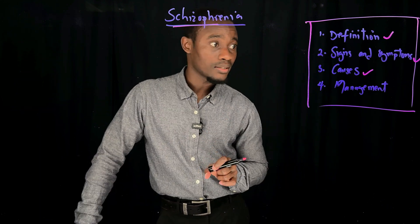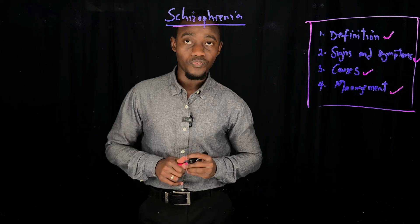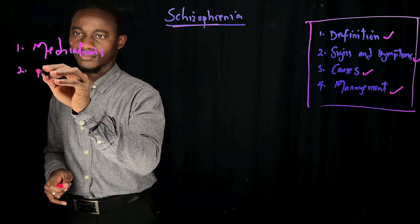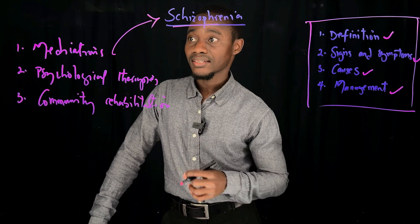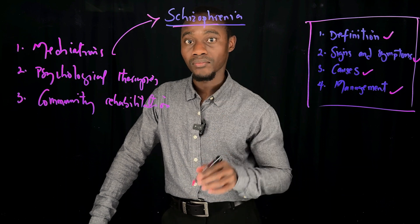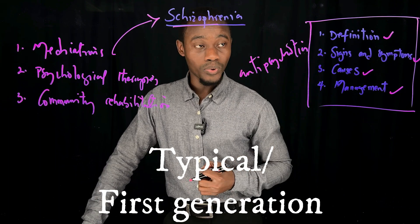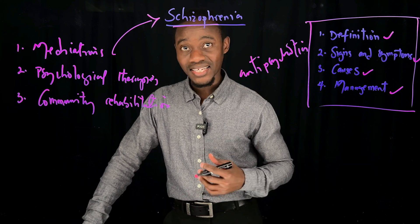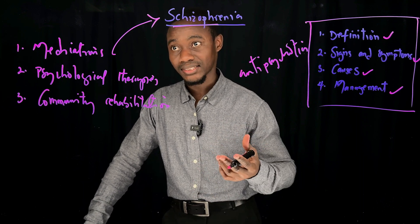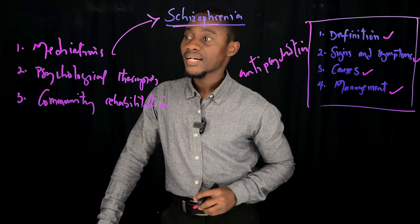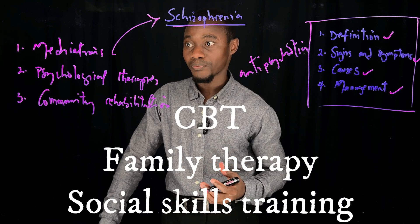We are going to end today's lecture by talking about the management of Schizophrenia. Under management, we have the use of medications, psychological therapies and community rehabilitation. The most popular medications used are called antipsychotics, which come in two forms: typical antipsychotics — also called first generation antipsychotics — and atypical antipsychotics, also known as second generation antipsychotics. Some are tablets and others are injections. Psychological therapies include talking therapies such as CBT, family therapies and social skills training.